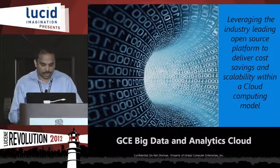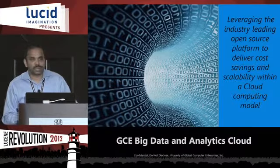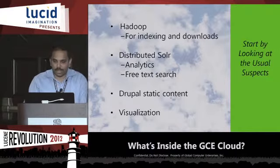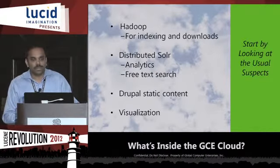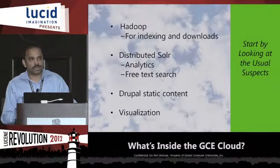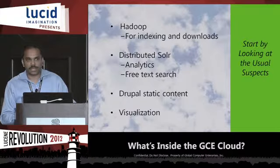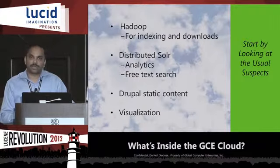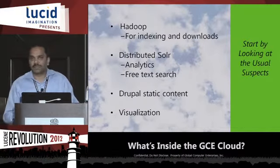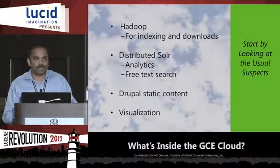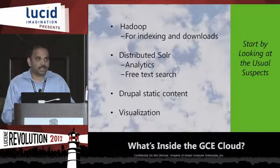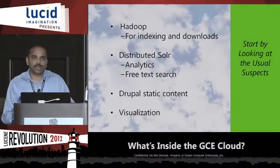We migrated to our big data cloud, which is based on a Hadoop-Solr combination. We use Solr for analytics and free text search, and Hadoop for indexing data from multiple sources. Whenever users request data feeds, files are generated using MapReduce jobs in parallel to get data out quickly. Drupal is used for static content, and there are many visualization widgets that act on data coming from Solr.